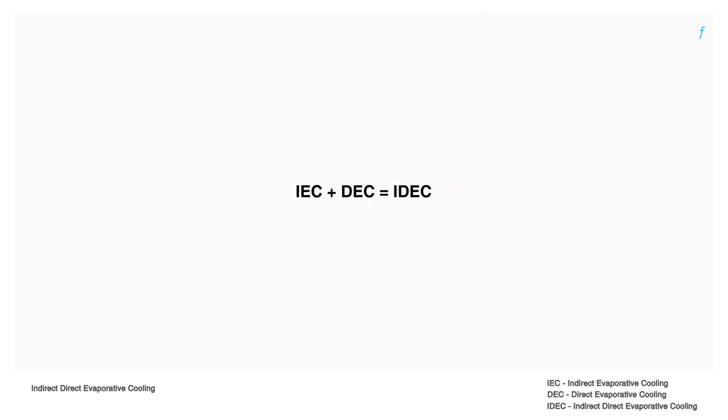In indirect direct evaporative cooling, air is cooled first with indirect evaporative cooling and then cooled further with direct evaporative cooling.